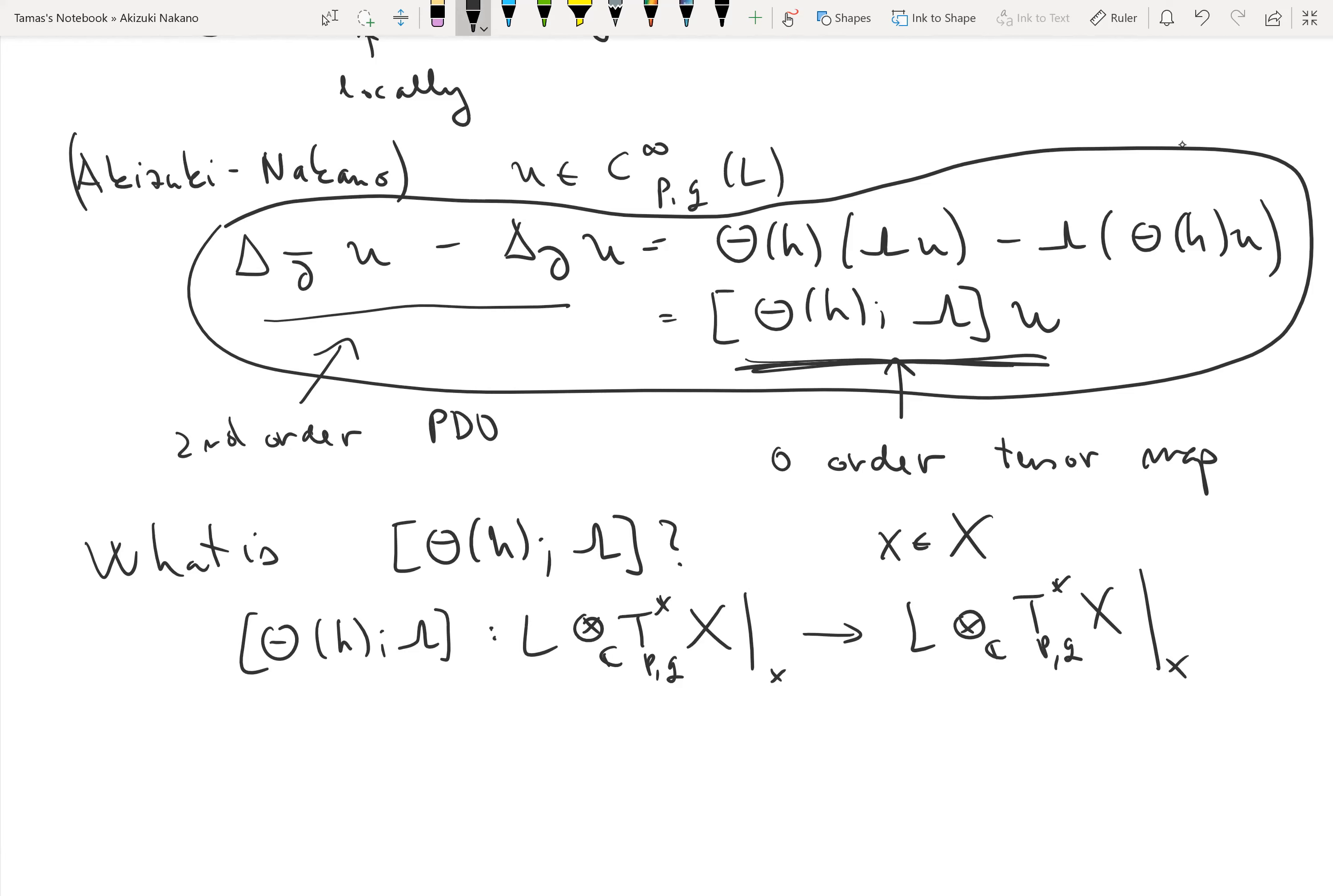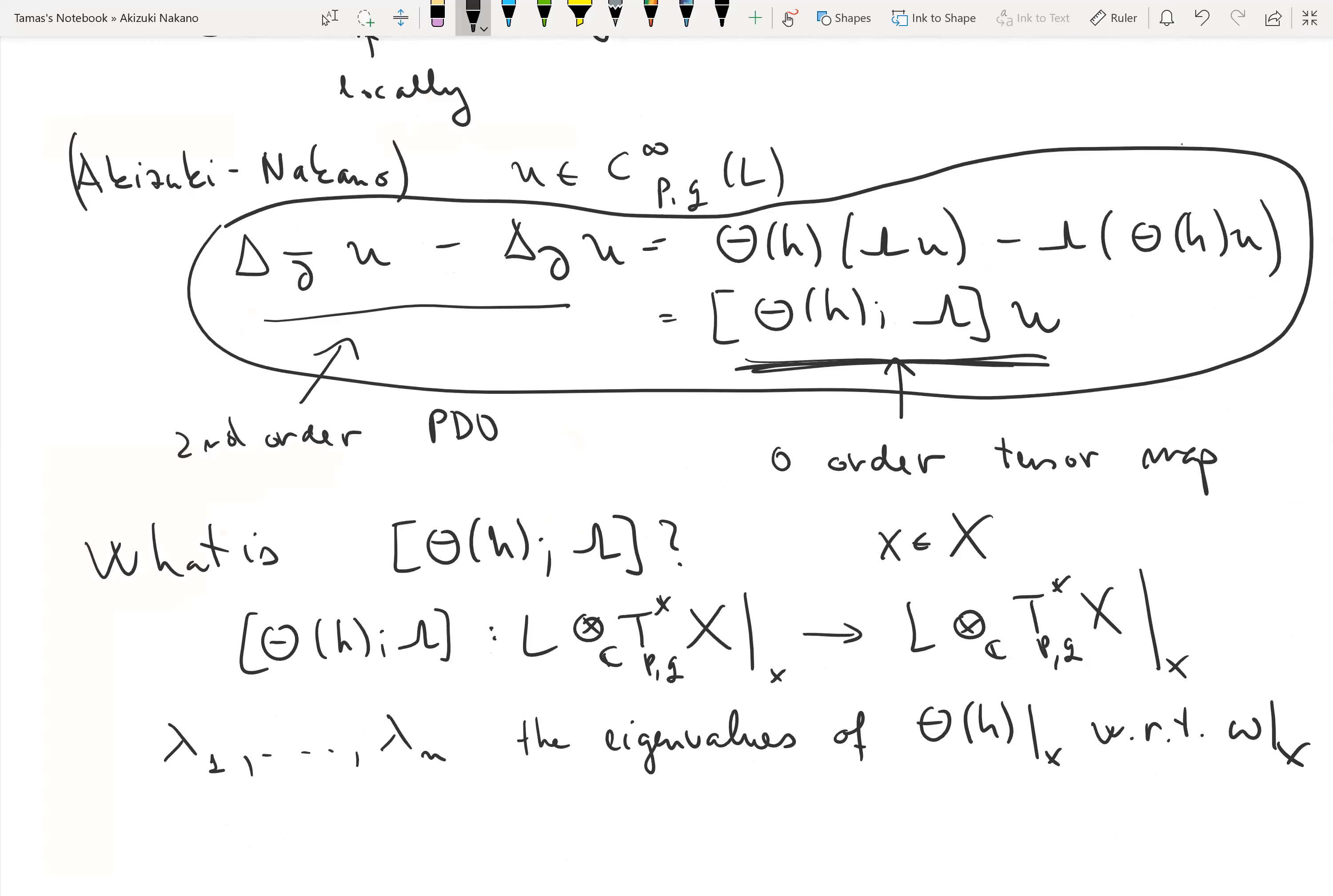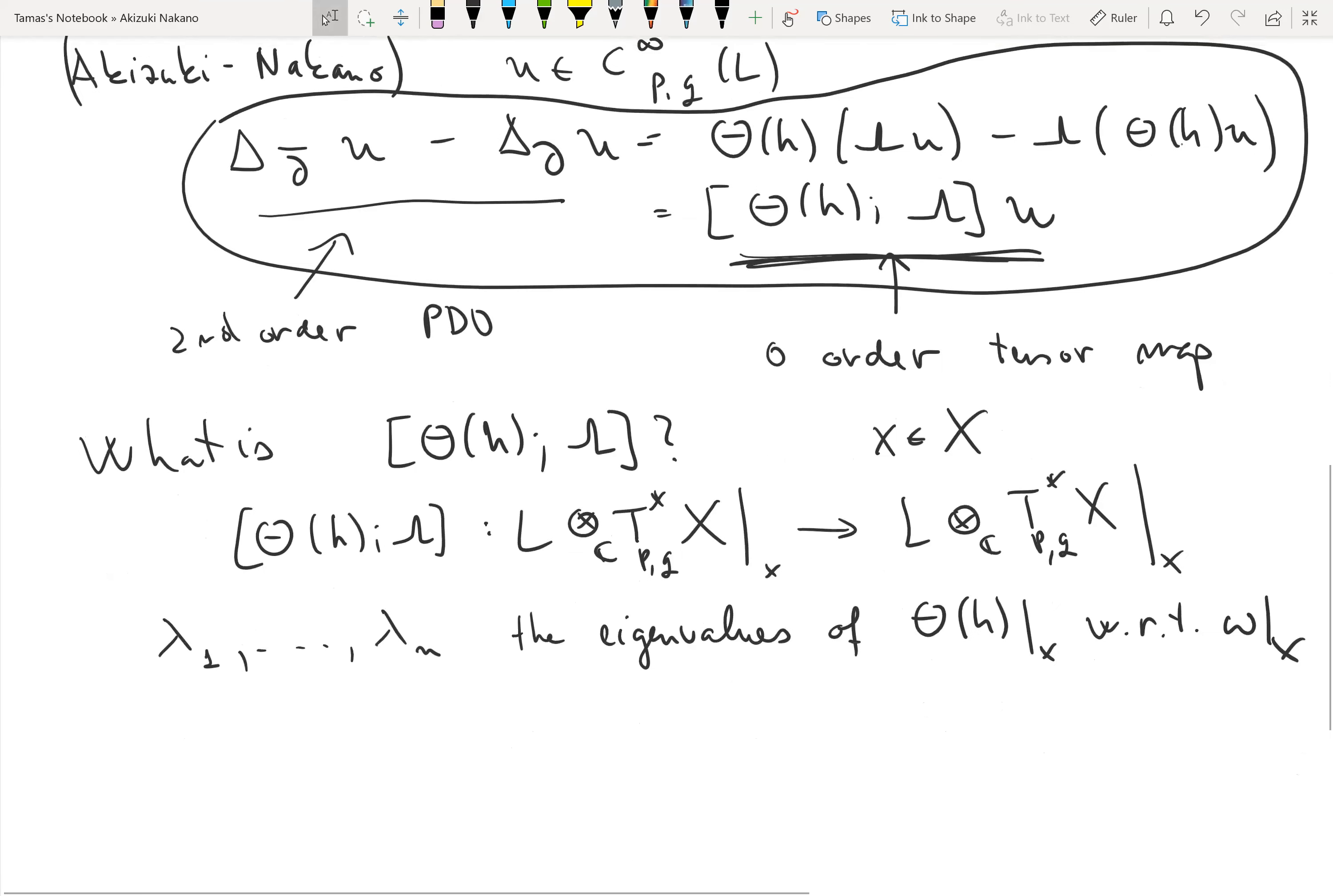Since theta_h is a (1,1)-form, I will denote by lambda_1 through lambda_n the eigenvalues of theta_h at x with respect to omega_x.